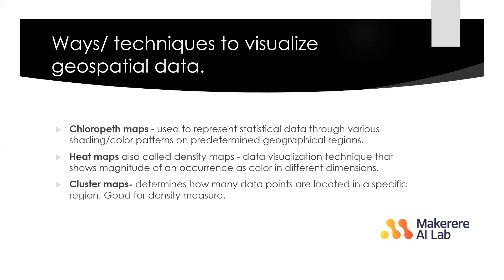Heat maps, also called density maps, are a data visualization technique that shows the magnitude of an occurrence using color in two dimensions — it's also based on color patterns. Then we have cluster maps, which determine how many data points are located in a specific region and are good for density measurement. With cluster maps, you see different data points where data is coming from, and when you zoom in, you get a better representation of what's coming from a particular region.